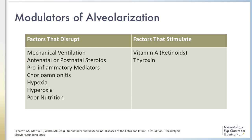Certain factors have been documented that either disrupt or stimulate the process of alveolarization. Both thyroxin and retinoids, such as vitamin A, have been shown to stimulate alveolarization. Mechanical ventilation is known to disrupt alveolarization and vascular development. Interestingly, although antenatal steroids increase the lung surface area in the fetus, both antenatal and postnatal steroids delay alveolar septation.